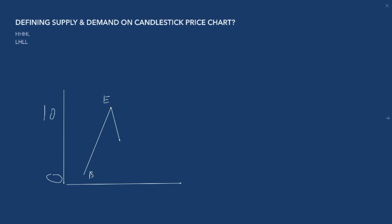The lower level was a bargain area — strong demand came in, proven by what price did at that zone. Now, once we're between a bargain area and an expensive area, we know this is a strong area of demand. If prices make a new high and push past that previous expensive price, then this area has to be a bargain again, because buyers were buying all the way up to that expensive point and still decided it was a bargain.